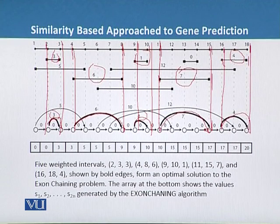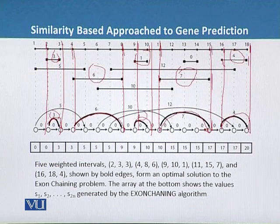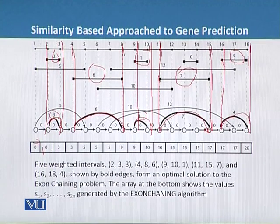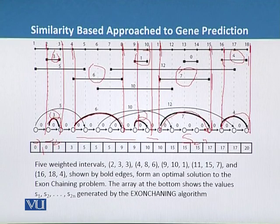By using these we can say that there is an optimal solution to the exon chaining problem. And the array at the bottom shows that the values start from S1 to S2 and it goes up to S2N, generated by the exon chaining algorithm.